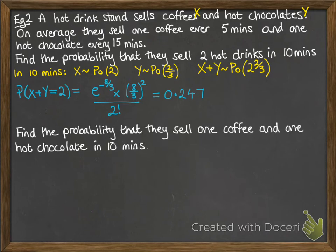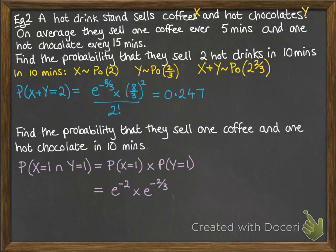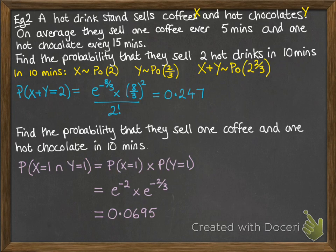Now, what if we want to find the probability that they sell one coffee and one hot chocolate in 10 minutes? This demonstrates an important difference. Before, we were looking at the probability they sold two hot drinks — it could be any combination of coffees or hot chocolates. This one specifically requires one coffee and one hot chocolate. So you want the probability that x equals 1 and y equals 1. You use the x and y distributions separately, putting lambda as 2 and 2/3 for each, and multiply those probabilities together because we want both events to occur. The final probability of selling one of each in 10 minutes is 0.0695.